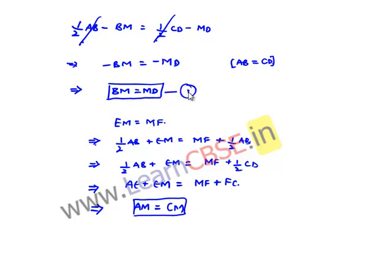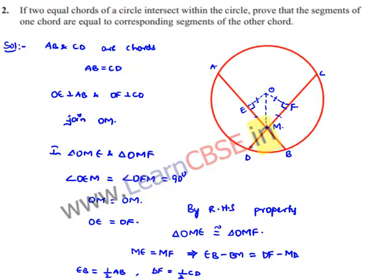Now by results 1 and 2, we can conclude that if two equal chords of a circle intersect within the circle, the segments of one chord are equal to the corresponding segments of the other chord.